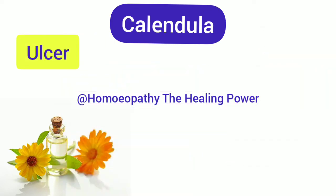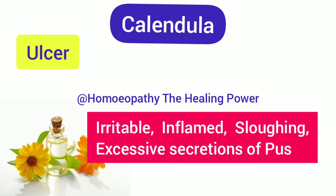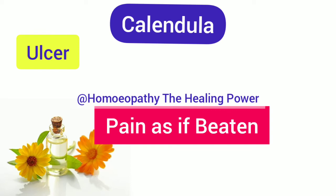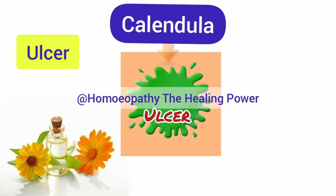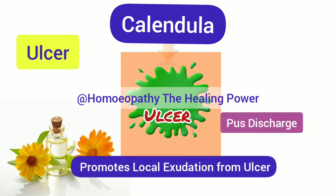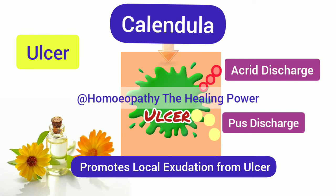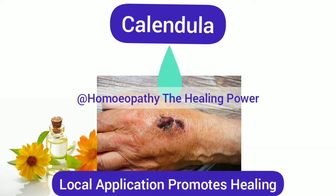Calendula in ulcers: Calendula is indicated in ulcers which are irritable, inflamed, and sloughing, with excessive secretion of pus and very painful — the pain being as if beaten. It is also indicated in ulcers of varicose veins. Calendula has the power to produce local exudation from ulcers, help in discharge of pus, and promote an accurate type of discharge that makes the ulcer healthy and clean, promoting rapid healing. Local application of Calendula on cuts, open wounds, and ulcer areas promotes healthy and rapid healing.